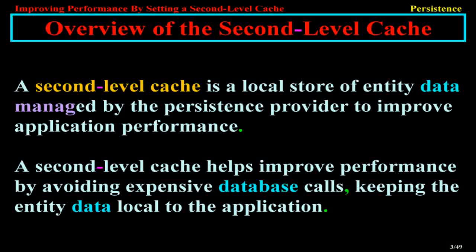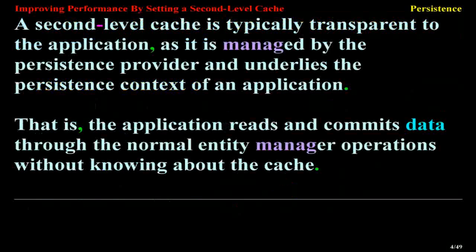A second-level cache helps improve performance by avoiding expensive database calls, keeping the entity data local to the application. A second-level cache is typically transparent to the application, as it is managed by the Persistence Provider and underlies the persistence context of an application. The application reads and commits data through the normal entity manager operations without knowing about the cache.